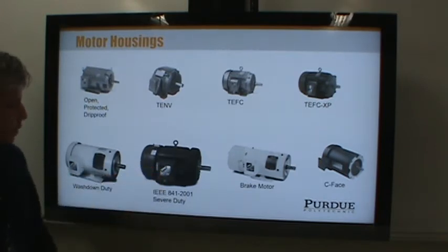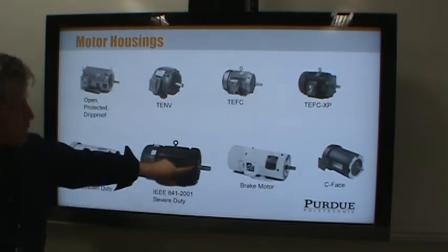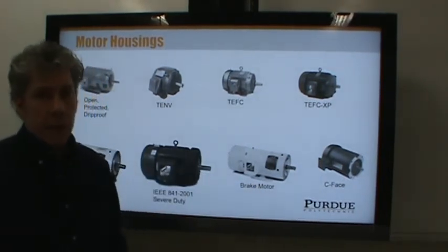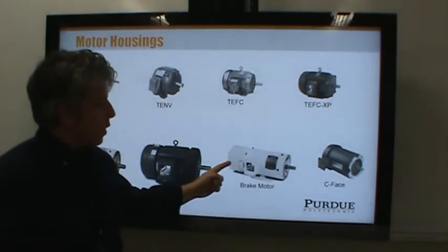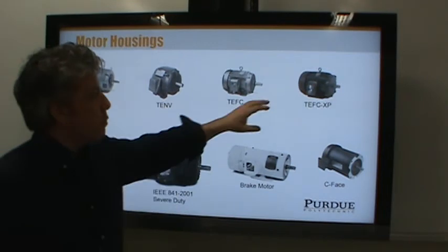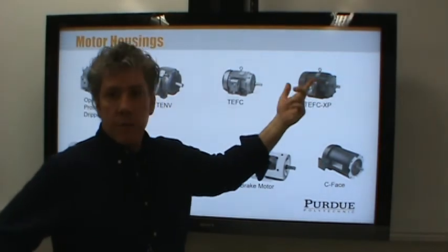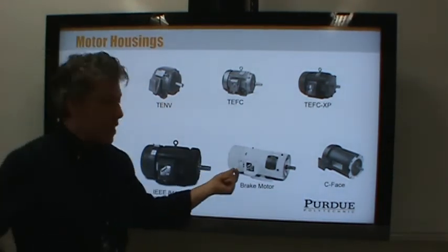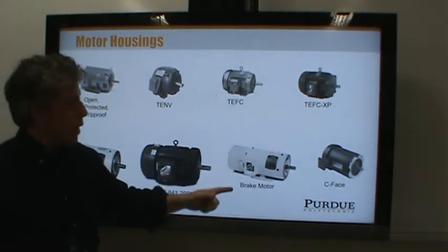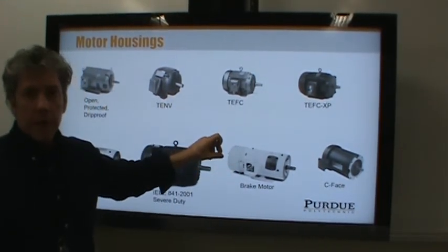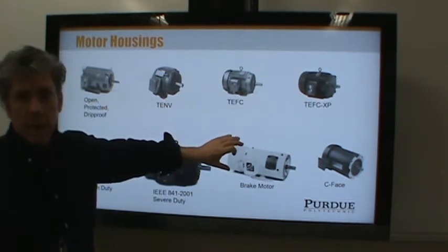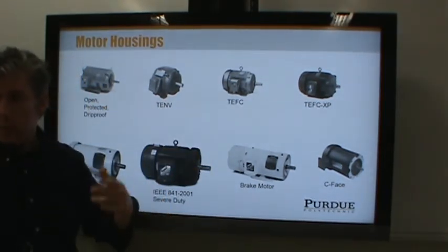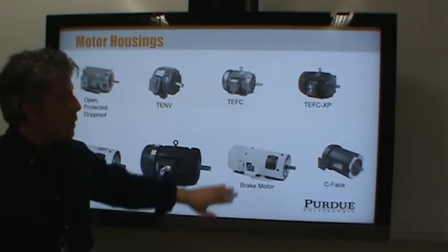Here's a severe duty motor — notice it has fins even on the face to get as much heat out as possible. A brake motor has a brake on the back, which is extended. Most motors will coast to a stop when power is removed. A brake motor has several options: some brakes require activation via extra wiring, others are mechanically driven by a centrifugal switch that activates the brake as the motor slows down.